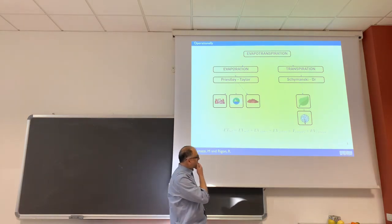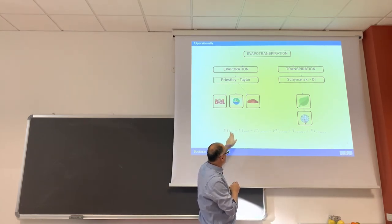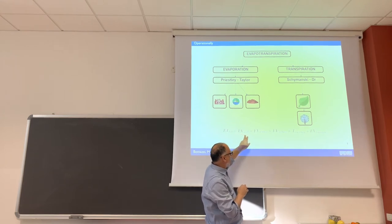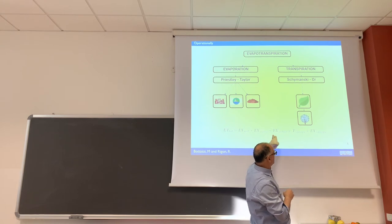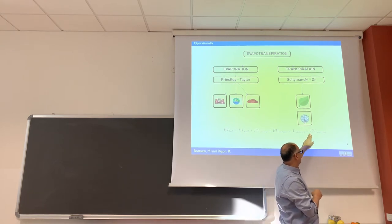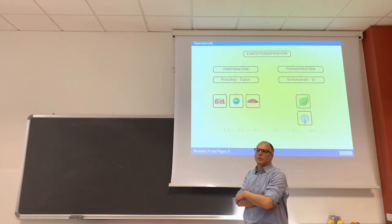When I say about canopy, in any case we have our total evaporation. It's evaporation from soil, evaporation from urban surface, from water surface, and transpiration from canopy and evaporation from canopy. What is evaporation from canopy?